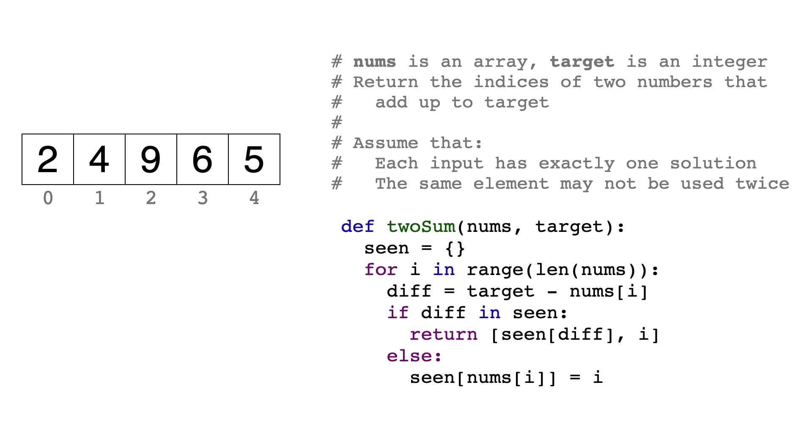So let's go over the problem first. We are given two arguments: nums, which is an array of integers, and target, which is just an integer. Given those two arguments, we need to return the indices of two integers in the array that add up to target. We can also assume that there is exactly one solution and that the same number can't be used twice.